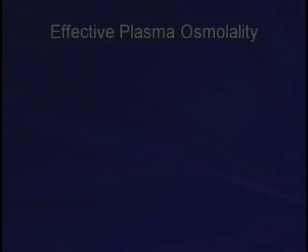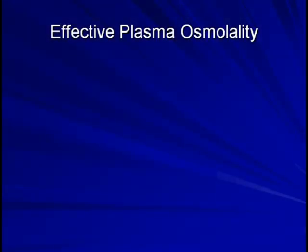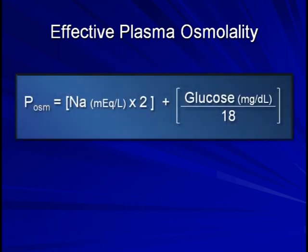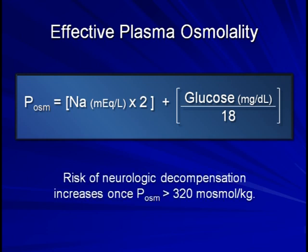A word about effective plasma osmolality. This is a frequently overlooked value in DKA and HHS, but it's critical to be aware of its significance. It's calculated as 2 times the sodium plus the glucose divided by 18. Patients have a significant risk of neurologic decompensation if their effective plasma osmolality is above 320 milliosmoles per kilogram.